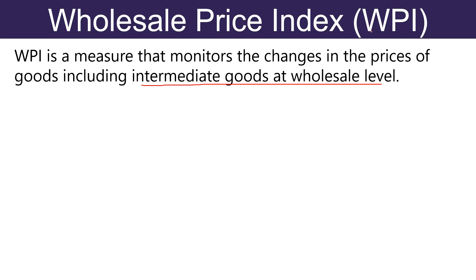We can understand this with an example. Suppose Wholesale Price Index with 2014-15 as base is 287 in 2021. This means that there is a rise in the general price level by 187%. In other words, Wholesale Price Index is a measure of average change in the prices of commodity for wholesale or bulk sale at early stages of the transaction, which gives a clear idea of recent economic trends.